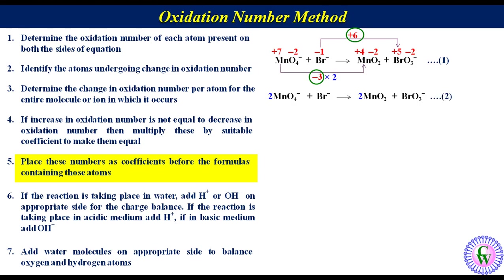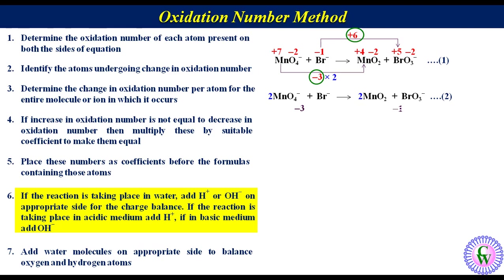Step number 6: Since the reaction is happening under basic medium, we add OH⁻ on the appropriate side for charge balancing. On the left side there are 3 negative charges while on the right there is only 1 negative charge, so we add 2OH⁻ on the right side. The equation becomes: 2MnO4⁻ + Br⁻ → 2MnO2 + BrO3⁻ + 2OH⁻ (equation 3).